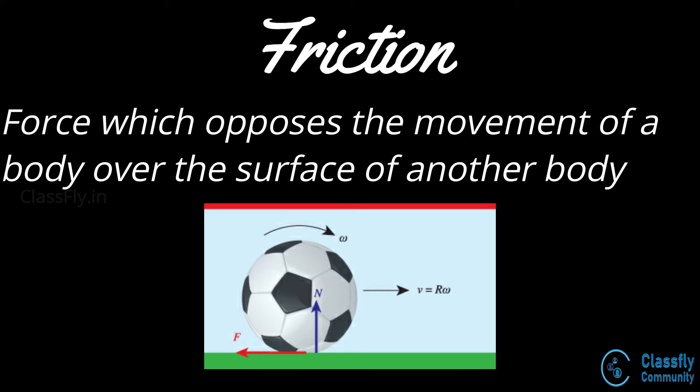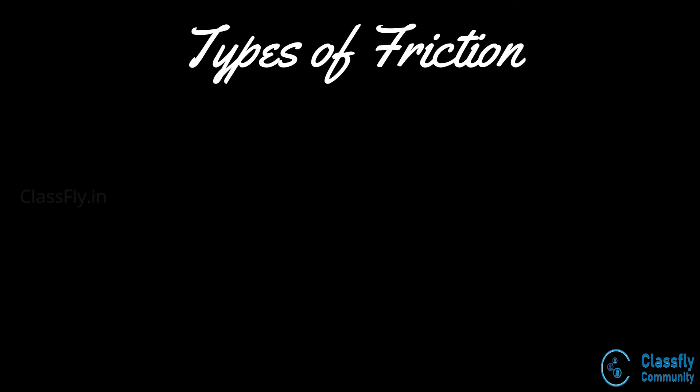The frictional force is provided by the ground and acts in the opposite direction to the ball's movement, bringing about a change in the state of motion of the ball. This force is known as friction. From this we know that the force of friction will always act in the direction opposite to the motion of the body. Now let us look into some of the types of friction.